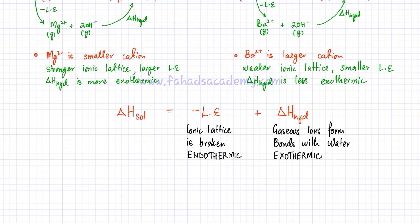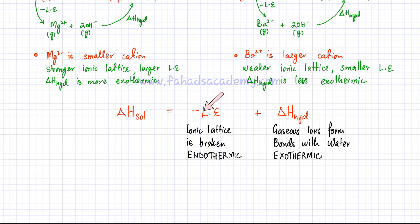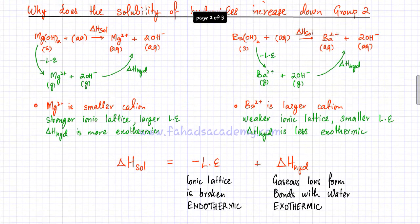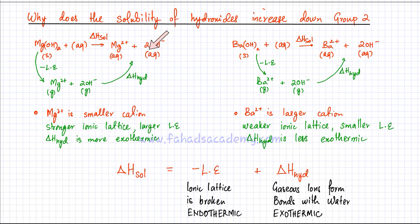As previously discussed, the enthalpy of solution equals minus the lattice enthalpy plus the enthalpy of hydration. The first part — breaking the ionic lattice — is endothermic and requires energy. The second part — enthalpy of hydration, where gaseous ions form new bonds with water molecules to form aqua ions — is exothermic. Looking at the two Hess cycles drawn here: for barium hydroxide you first break the bonds, then new bonds form with water molecules. The same applies for magnesium hydroxide — break the ionic lattice, gaseous ions form, then aqua ions form.